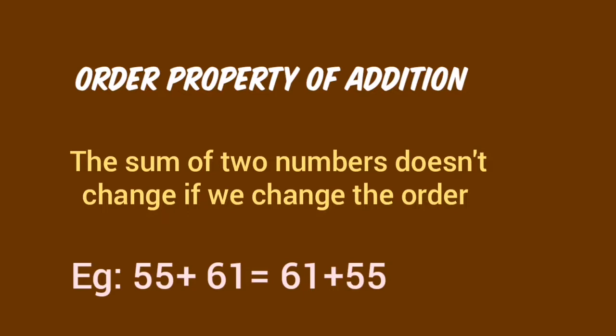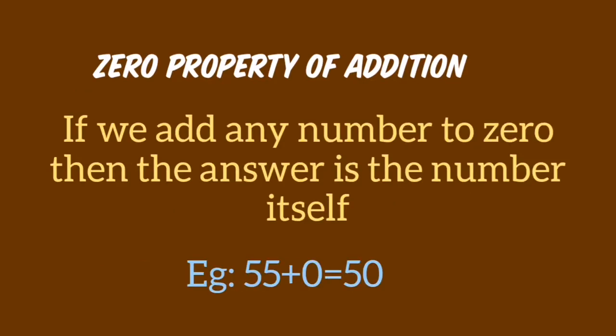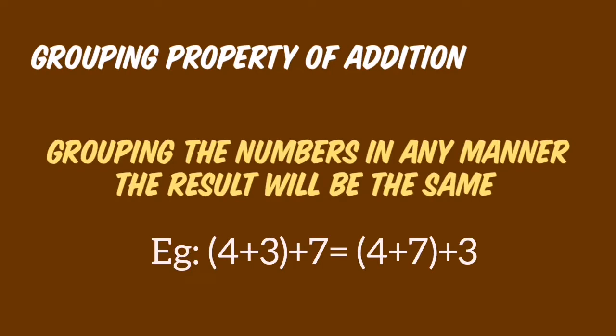The next property is the zero property of addition: if we add any number with 0, the result is the number itself. For example, 55 plus 0 is equal to 55. Next is the grouping property of addition: if we group any numbers, the result will be the same.